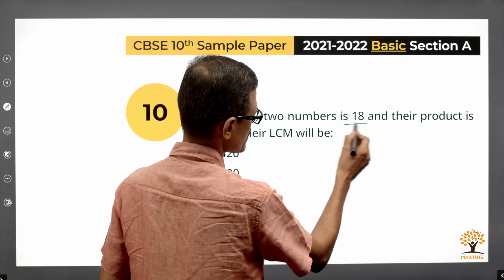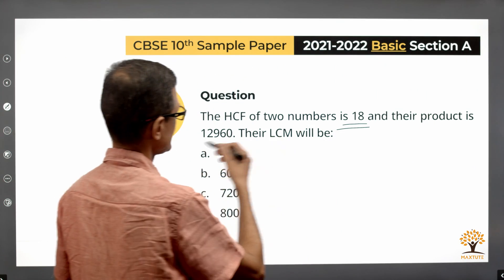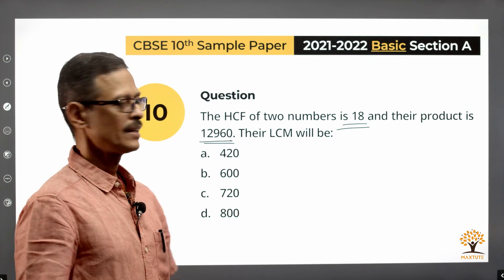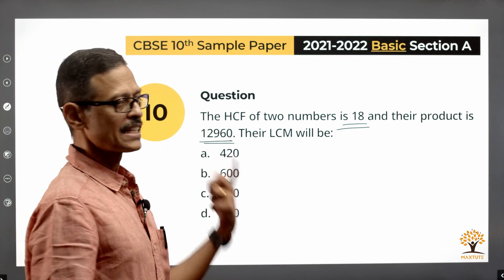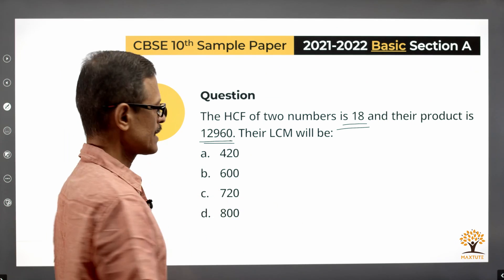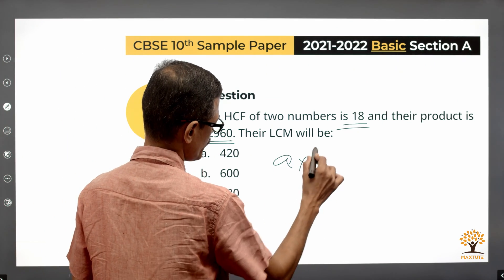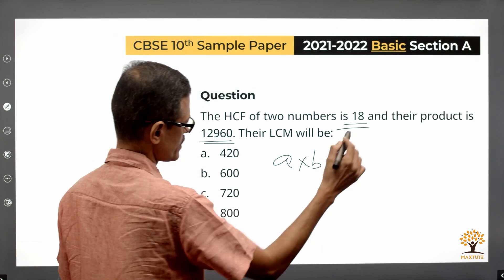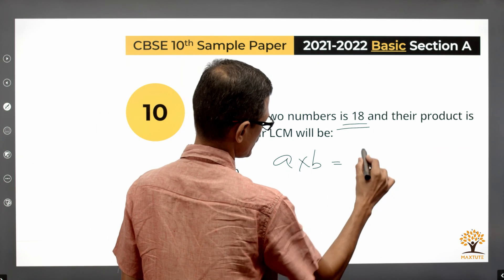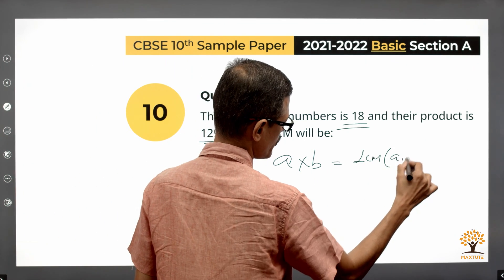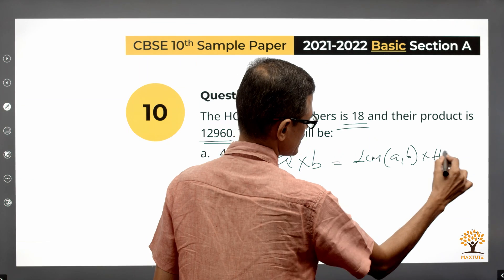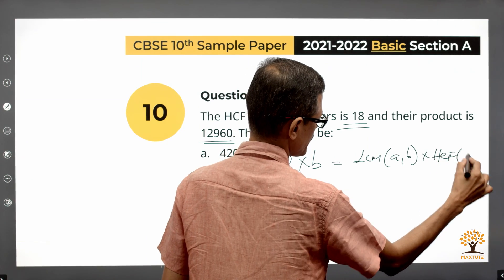The HCF of two numbers is 18 and their product is 12960. What will be the LCM of these two numbers? Let's say the numbers are A and B. The product of the two numbers A and B will always be equal to the product of the LCM of A and B and the HCF of A and B.